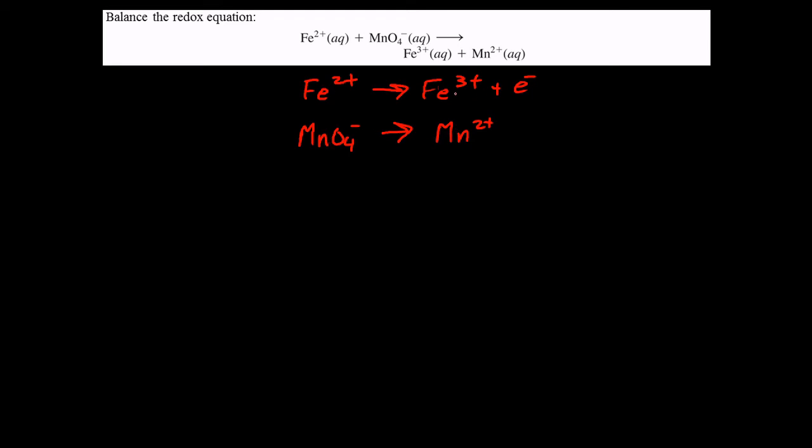So this half reaction is now balanced. If we do a similar thing here with the permanganate, the manganese is already balanced. To get the oxygen to balance, we're going to add four waters, which gives us the oxygens we need, but then messes up the number of hydrogens. And so we have to add eight H plus to get the hydrogens to balance, which is the next step there.